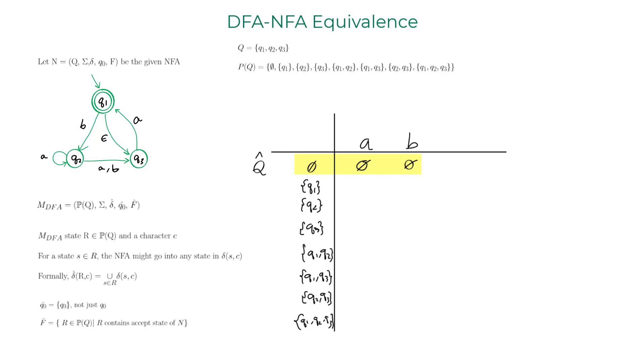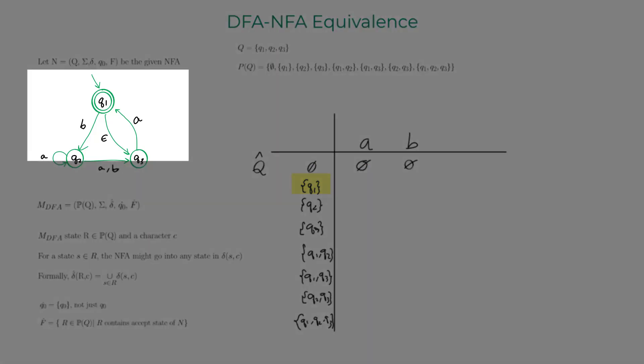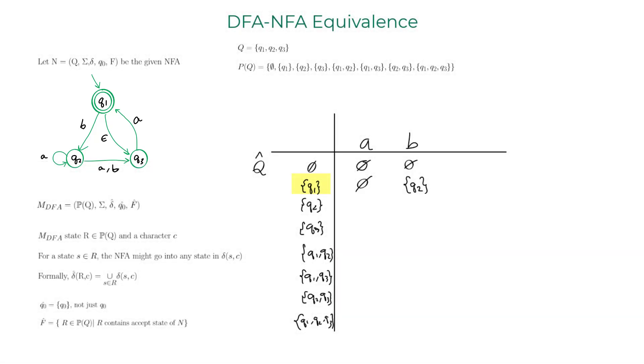So earlier I made a statement. For that statement to make sense, let's consider the state Q1. For Q1, there is no outward arrow transition for character A, so we map it to the empty set. For the character B, it goes to Q2. For Q2, it goes to both Q2 and Q3 for character A and just Q3 for character B.